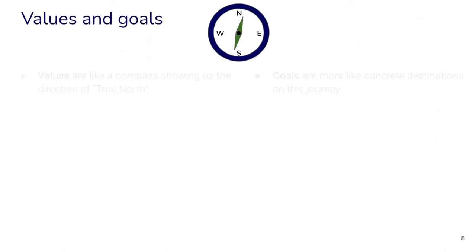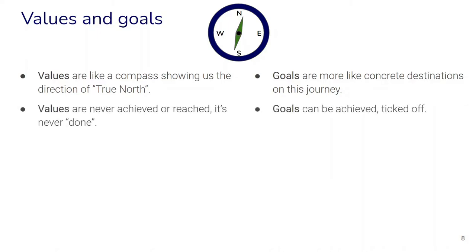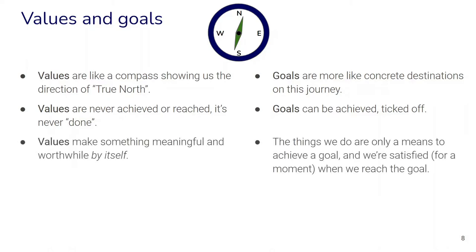Here are some ways to summarize the differences. Values are more like a compass showing us the direction of true north, whereas goals are more like concrete destinations on this journey. Values are never really achieved or reached — it's never really done. Just like we can never really achieve west, we can always just move towards west. Versus goals, which can be achieved and ticked off. We can get to Berlin but we can never really get to west. Values also make our actions and experiences meaningful and worthwhile by themselves, whereas the things we do for goals are only a means to achieve that goal, and we're more or less satisfied for a moment when we actually reach the goal.